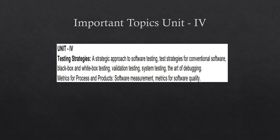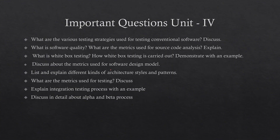For Unit 4, the important topics are the strategic approach to software testing, testing metrics, white box testing, and black box testing. The important questions include: what are the metrics used for testing, the integration testing process, alpha and beta testing, white box testing, and software quality. Prepare these topics — one question from this unit may come in your exam. I understand videos are coming a little delayed, but this will be worthwhile.